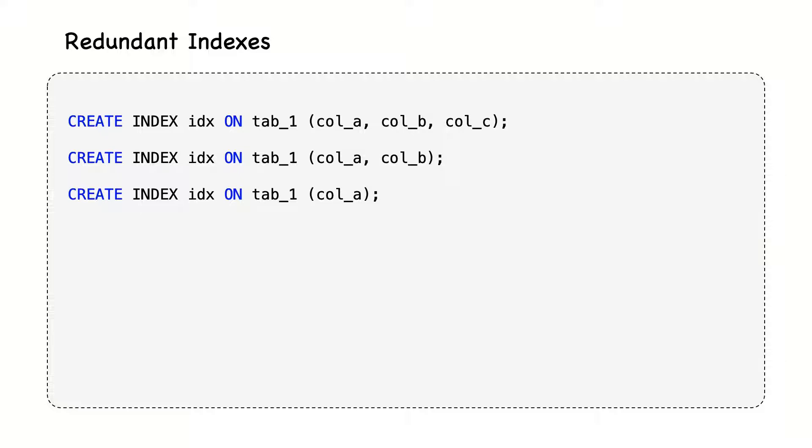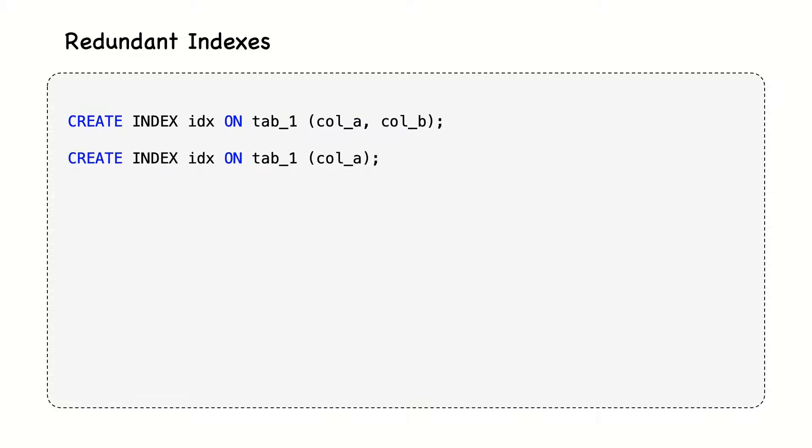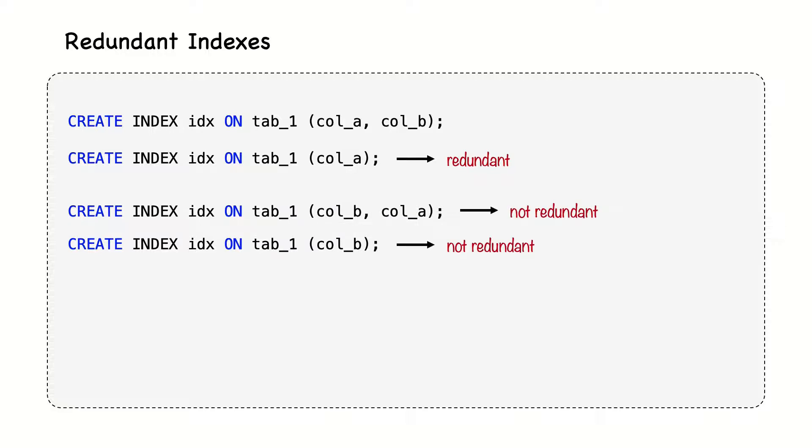First, redundant indexes are a bit different from duplicate indexes. If there is an index on AB, then another index on A would be redundant, because it is a prefix of the first index. Essentially, the index on AB is at the same time an index on A. However, an index on BA would not be redundant and neither would be an index on B only, because B is not a leftmost prefix of AB.